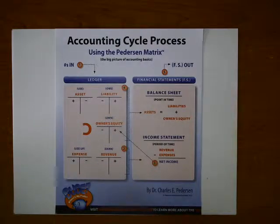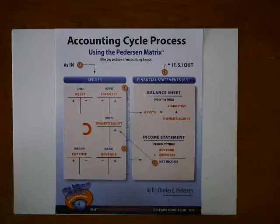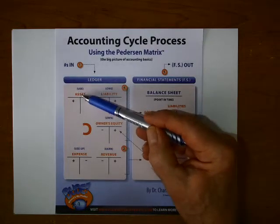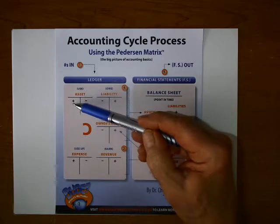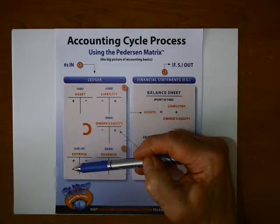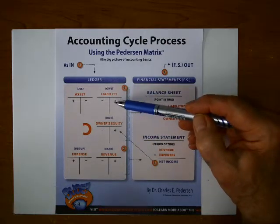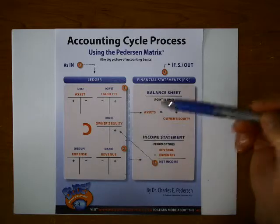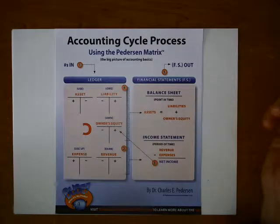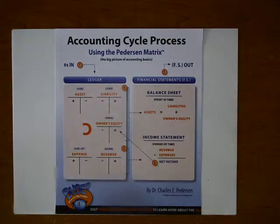Remember, every single number in accounting will be included in one or more of these five general categories — no exception. Some accounts record increases on the left side and some on the right side. The way the backwards C is set up, assets and expenses are on the left side of the ledger and record increases on the left side of their accounts. Liability, owner's equity, and revenue are on the right side of the ledger and increase on the right side. Just quickly sketch the backwards C and you have it — you don't have to memorize it, you can just visualize it.